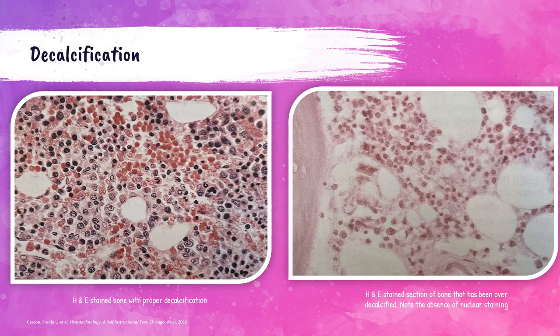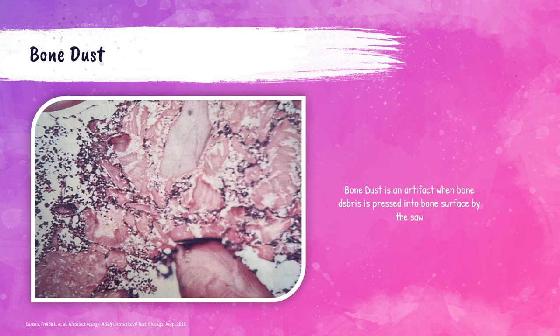A bone section stained with H&E shows a properly decalcified specimen with preserved nuclear basophilia; red and white blood cell lines can be easily distinguished. Another H&E-stained bone section shows over-decalcification, where there is no nuclear staining. A photo also shows bone dust artifact, which occurs when bone debris is pressed into the bone surface by the saw; this can be prevented by using a saw with a diamond blade, which allows thin sections to be cut without debris.